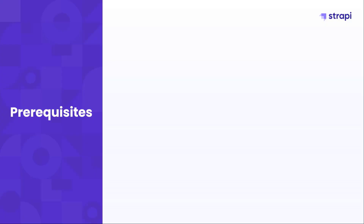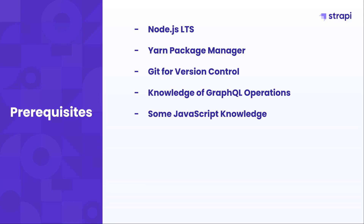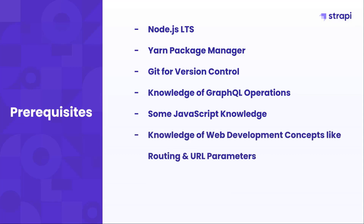Let's look at what you need to know to get started. You need a long term version of Node.js, which at the moment is 14. You need the yarn package manager to install dependencies. You need Git for version control. You need knowledge of GraphQL operations like queries. You'll need some JavaScript knowledge as we'll be working with Nuxt.js and Strapi, both based on Node.js. You also need knowledge of web development concepts like routing and URL parameters as we go about building out our blog.